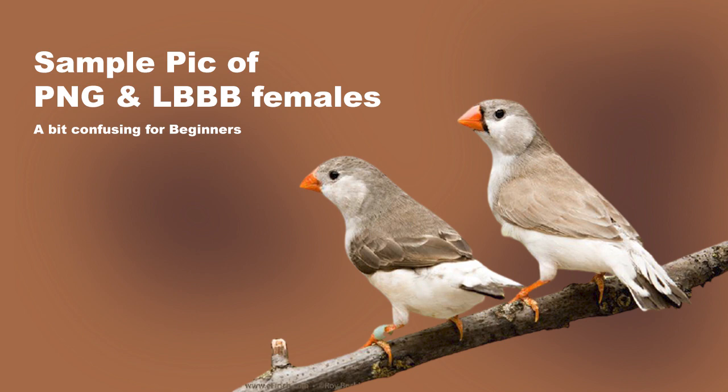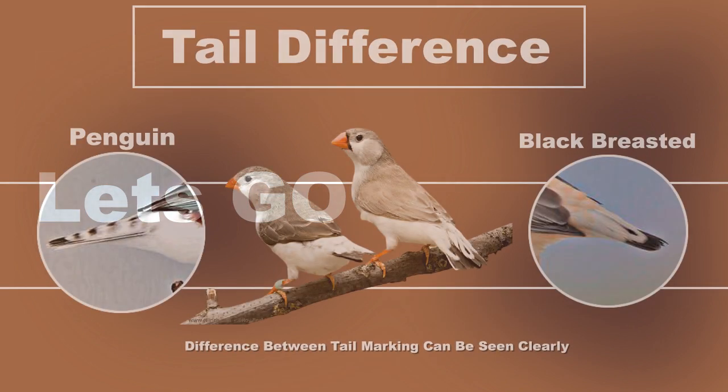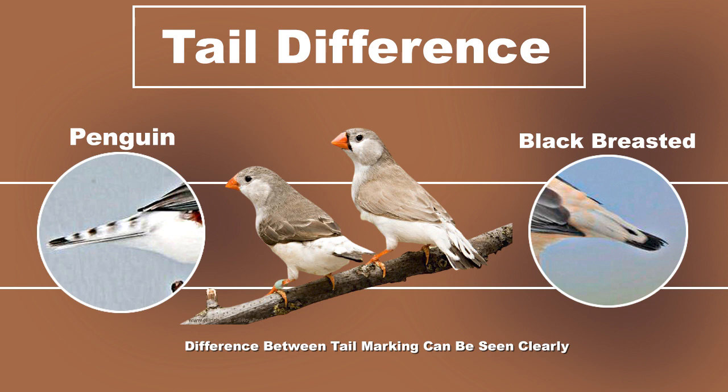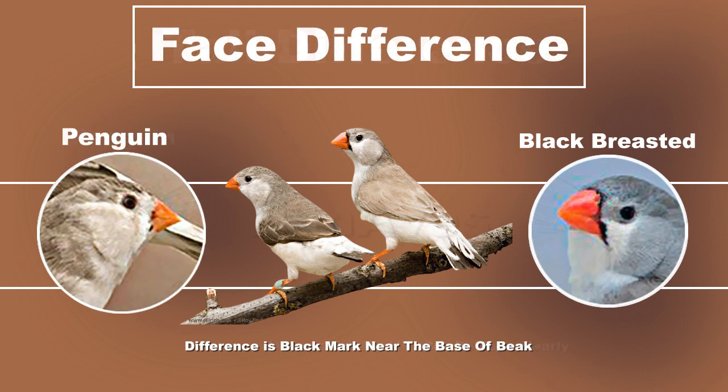Let's go. Here we will identify them by their tail markings. In the left-sided picture you can see the frosted tail markings of a penguin mutation, while in the second picture you can see the elongated vertical tail markings, which are the typical markings of a black-breasted mutation.